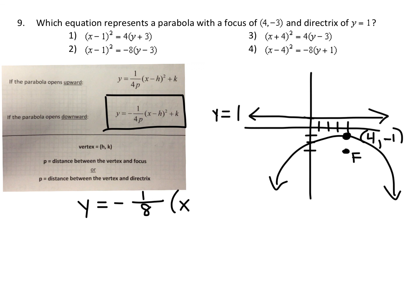Now we fill in the equation: y equals negative one-eighth times (x minus h) squared plus k. The h and k are just the coordinates of the vertex. So it's x minus 4, close parentheses, squared. And instead of writing plus negative 1, that's just minus 1. Looking at the answer choices, we have x minus 4 squared — this is the only answer with x minus 4 squared, so choice four has to be the answer.